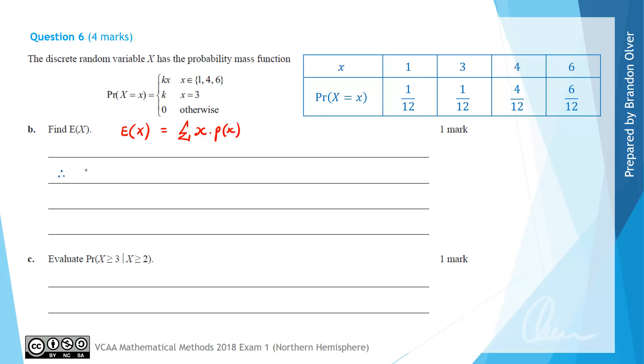So therefore, for this question, our expected value of x is going to equal 1 times 1 over 12, plus 3 times 1 over 12, plus 4 times 4 over 12, plus 6 times 6 over 12.